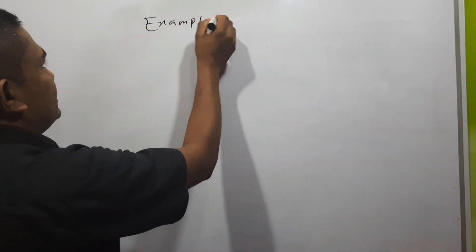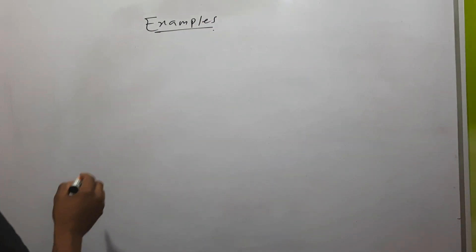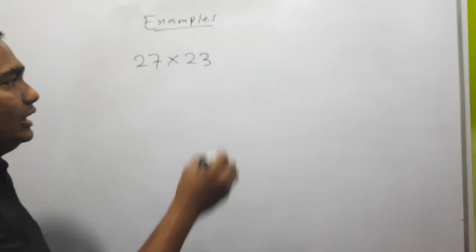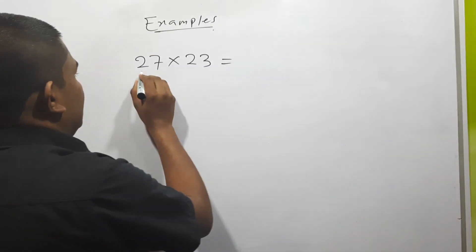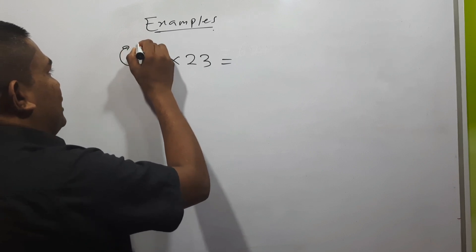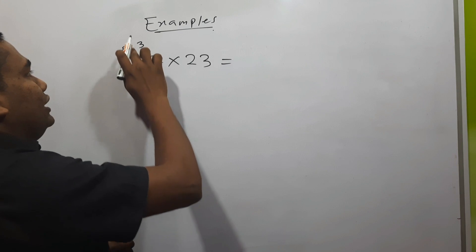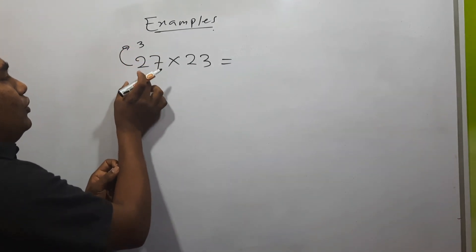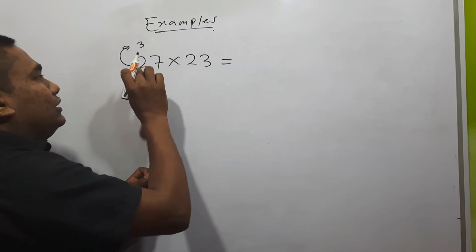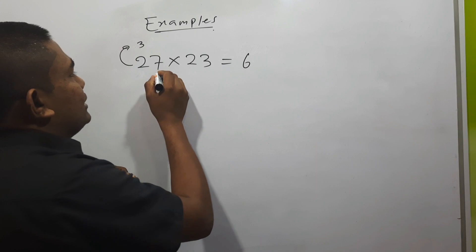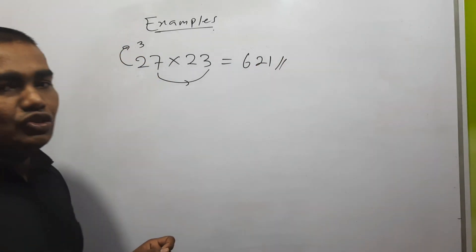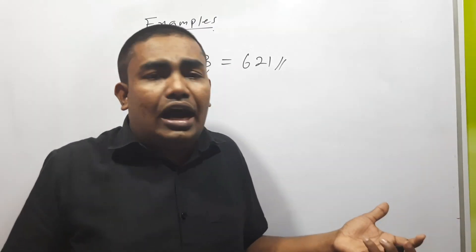The first example: 27 into 23. This is the 10th place number — two. We need to add one to the 10th place number, that will be three. Two into three — we multiply the given 10th place number with the added number: 2 into 3 is 6. Then simply multiply the unit place numbers: 7 into 3 is 21. The answer is 621, within two to three seconds.